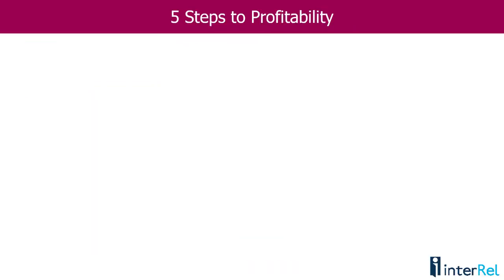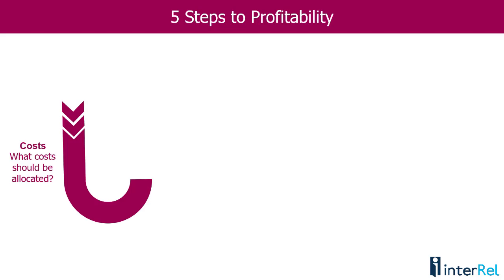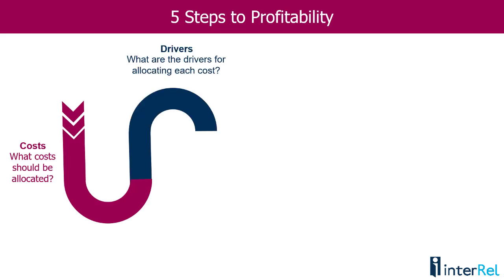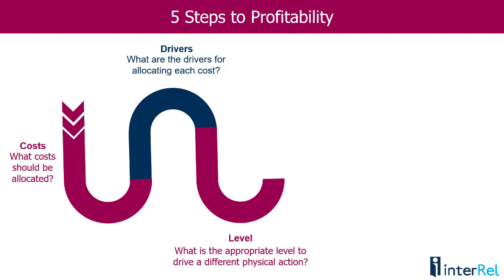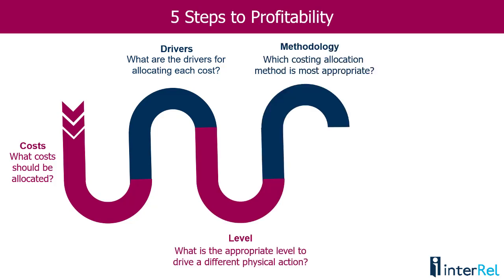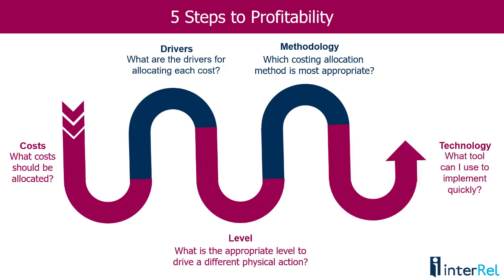So those are our five steps to profitability. One: what costs should be allocated? Two: what are the drivers for allocating each cost? Three: what is the appropriate level to drive a different physical action? Four: which costing allocation method is most appropriate? And five: what tool can I use to implement quickly?